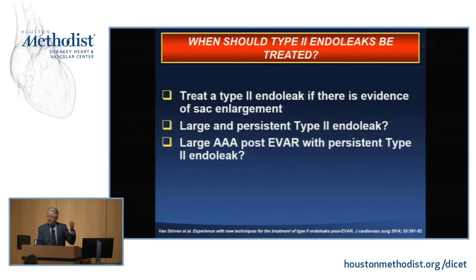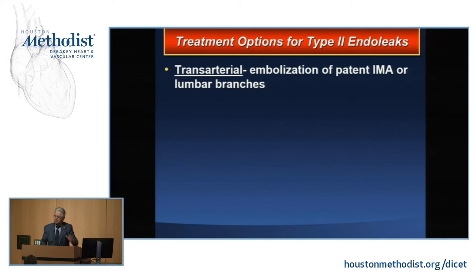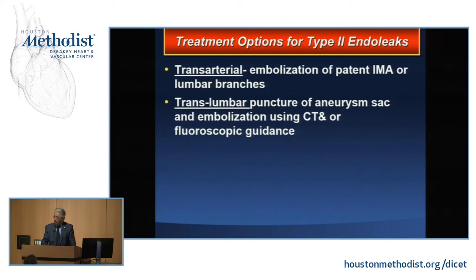There are several approaches to treat type 2 endoleak. One of the simplest is through the trans-radial approach — going from the superior mesenteric to the inferior mesenteric into the sac and coil embolizing. This has been done from the very beginning. Another option is going through the iliac lumbars or internal iliac arteries. Trans-lumbar puncture allows you to get directly to the leak area and coil embolize, or use Onyx or other glue.